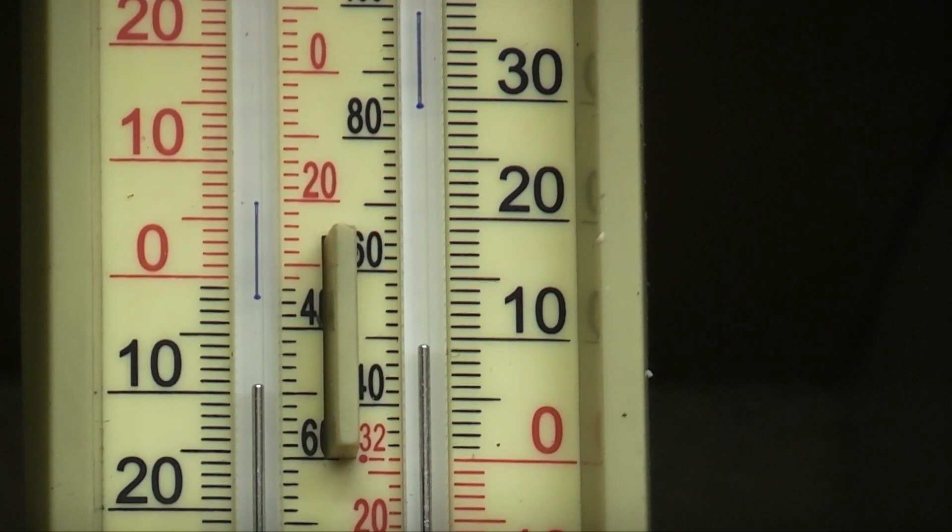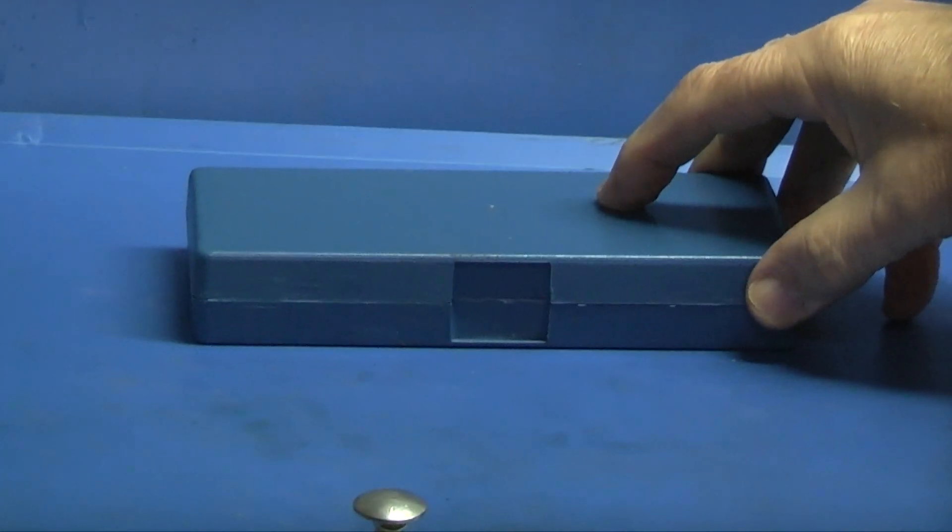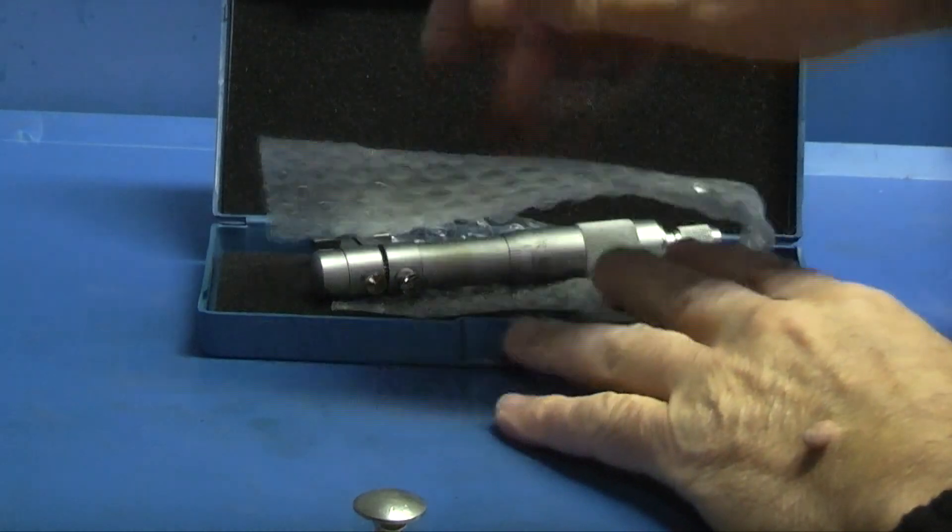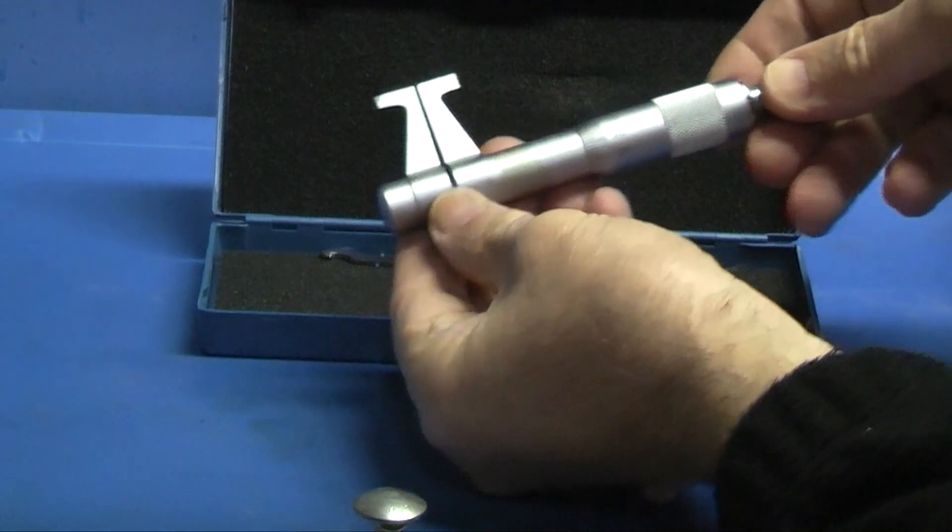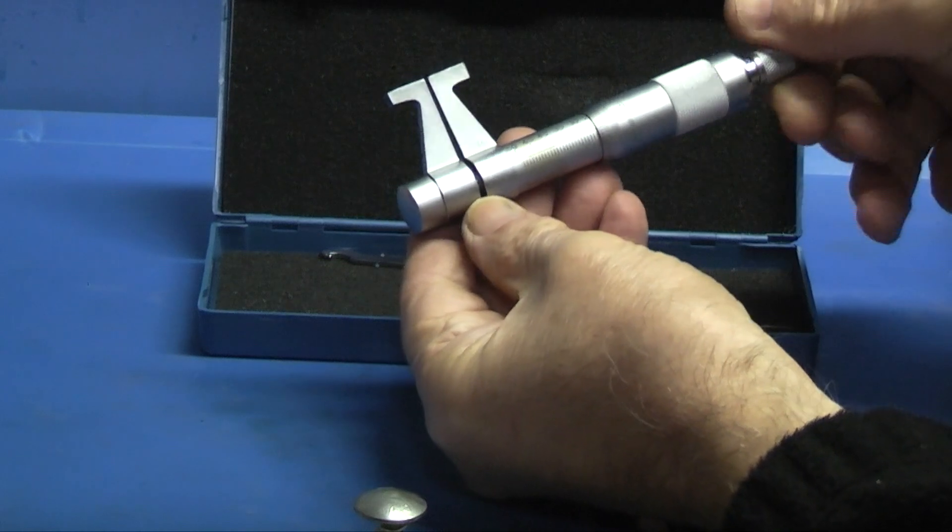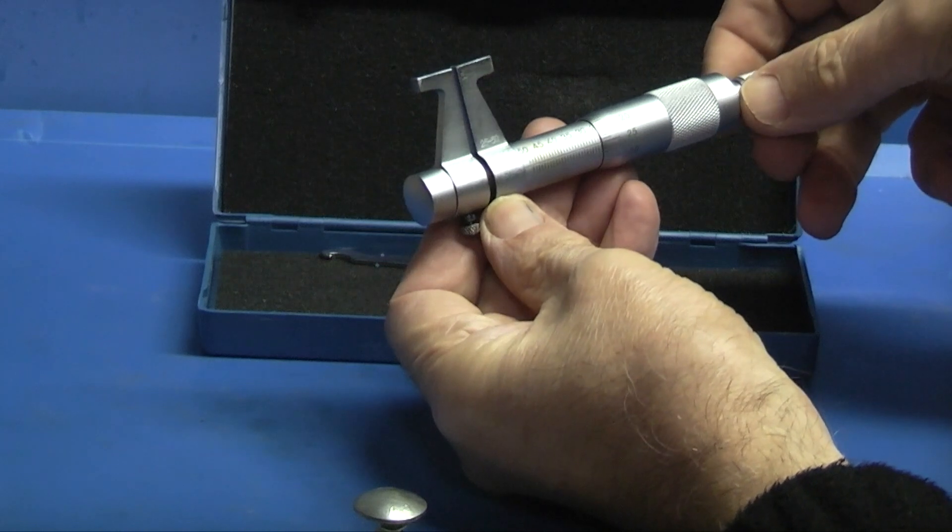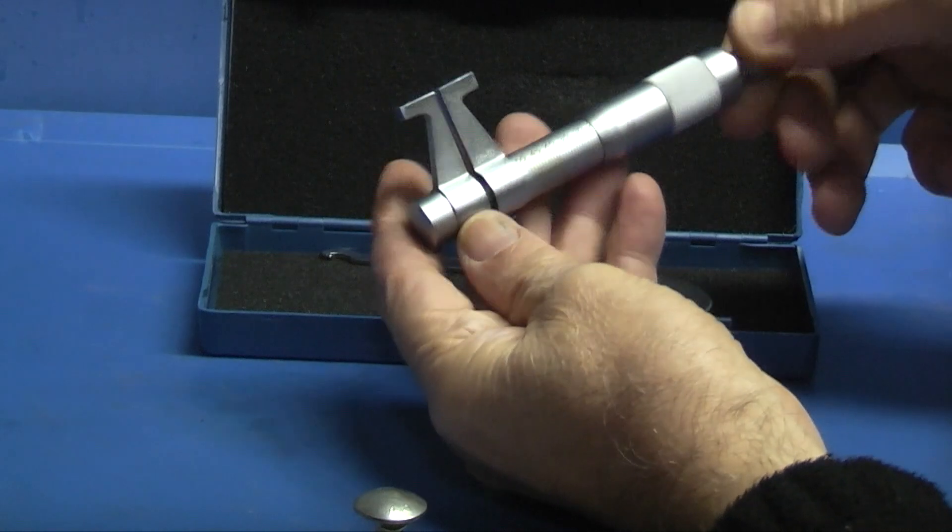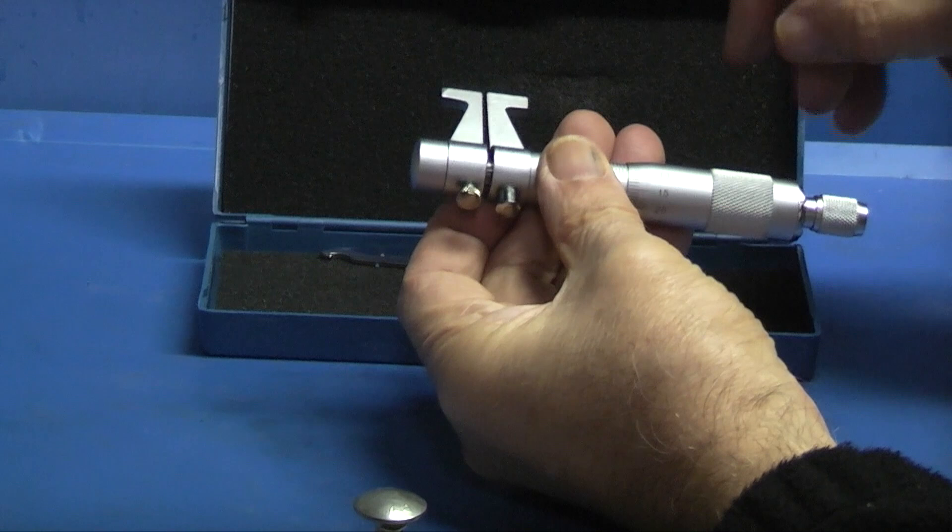The temperature in the workshop today is about nine degrees centigrade. Today we're having a look at this internal micrometer from Banggood. This is a 25 to 50 millimeter range. The body is made out of stainless steel.